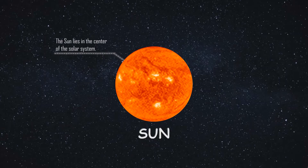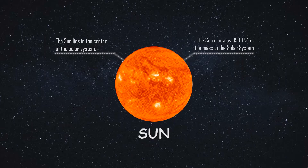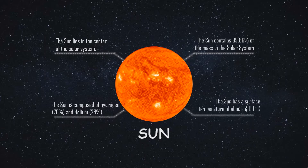This is the sun. The sun lies in the center of the solar system and it is one of the heaviest bodies, containing 99.86% of the mass of the solar system. It is composed of 70% hydrogen and 28% helium, and there are always nuclear reactions on the sun which raise its surface temperature to 5,500 degrees Celsius — the core is even hotter.